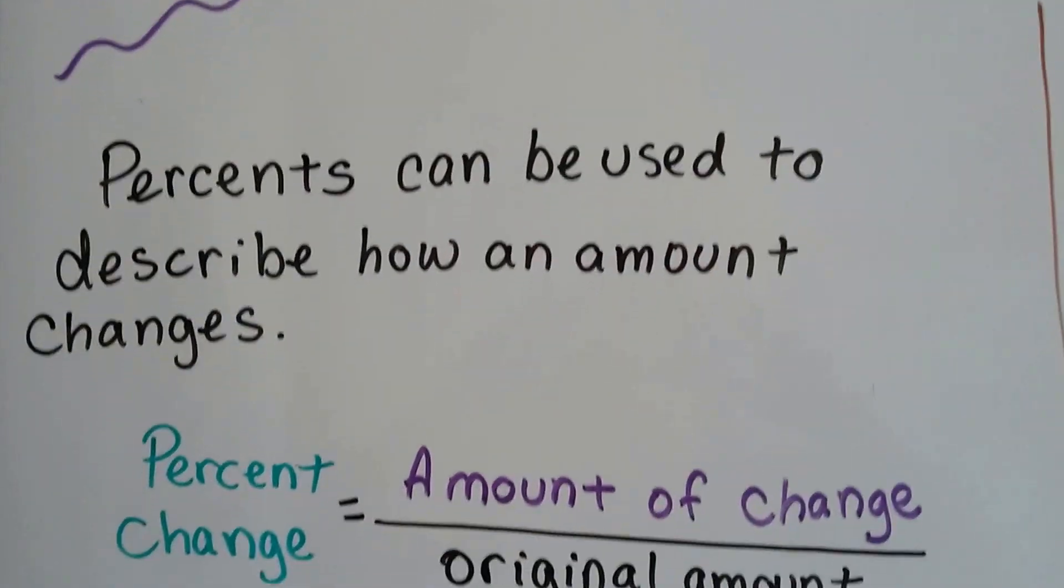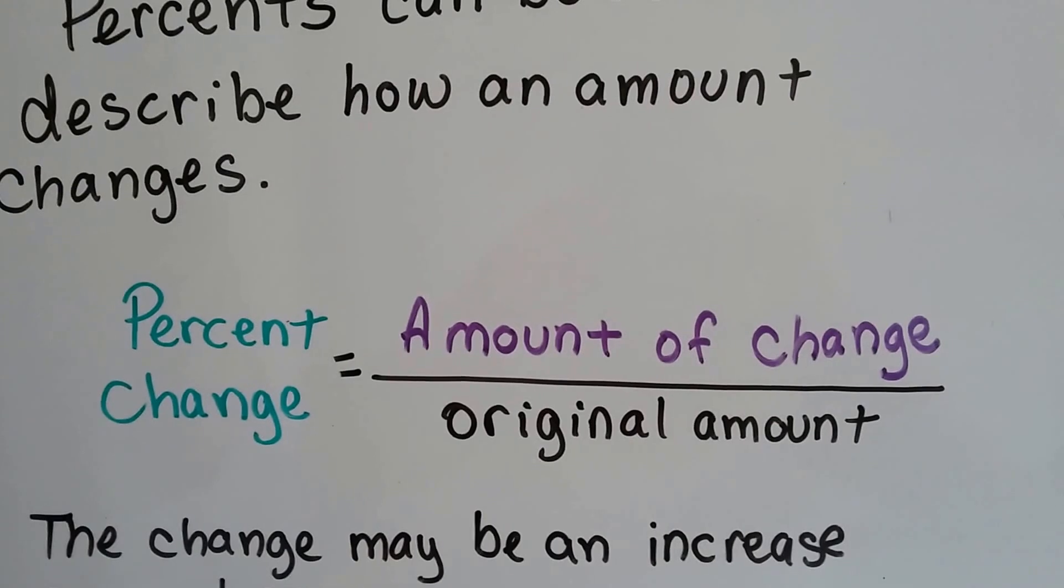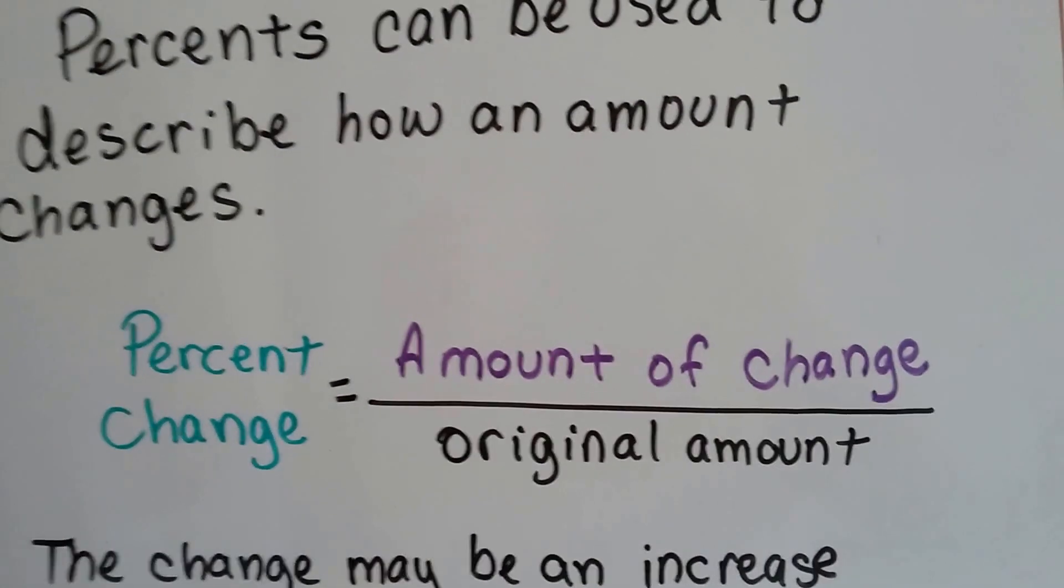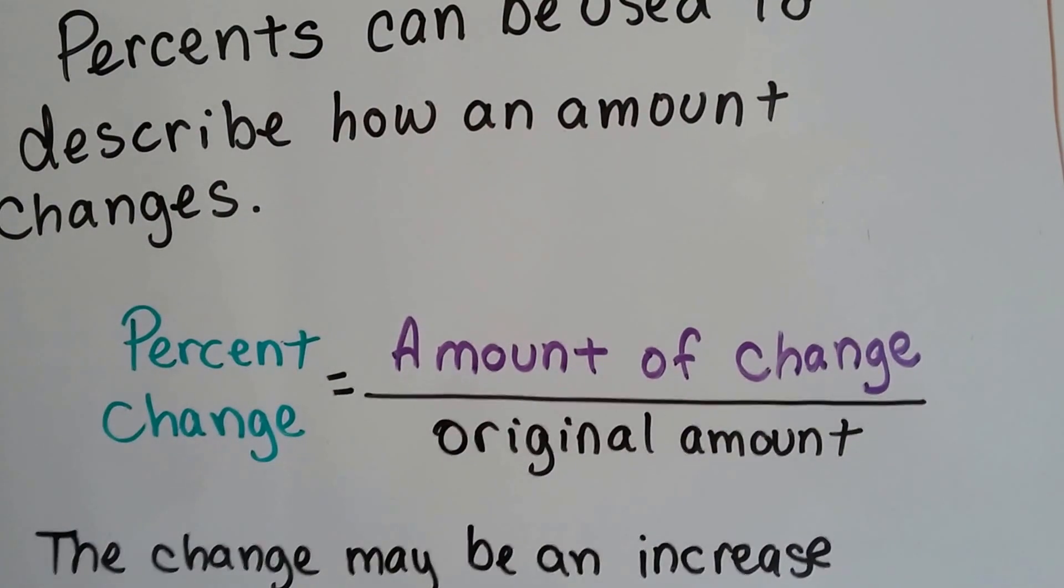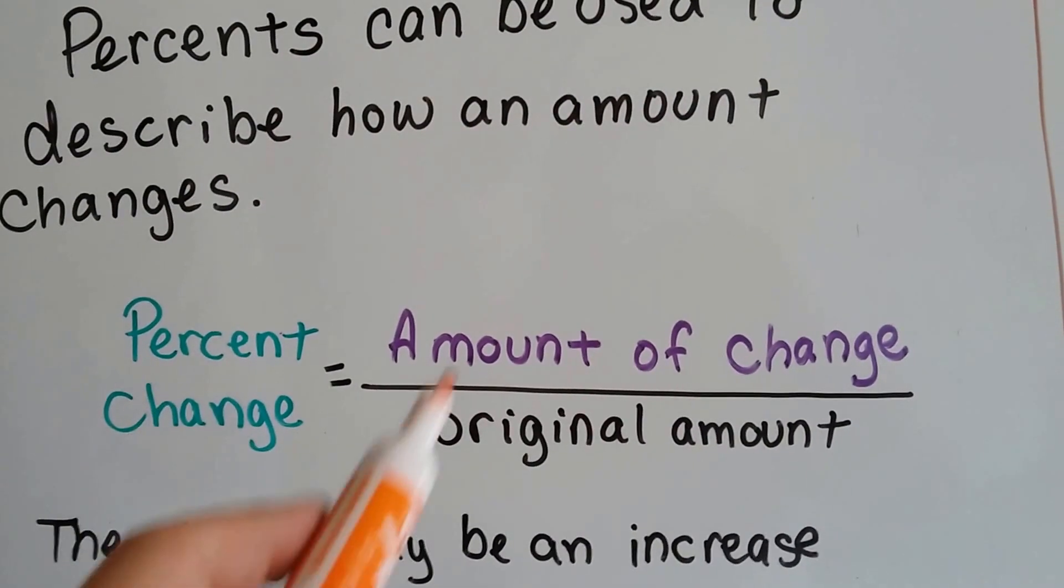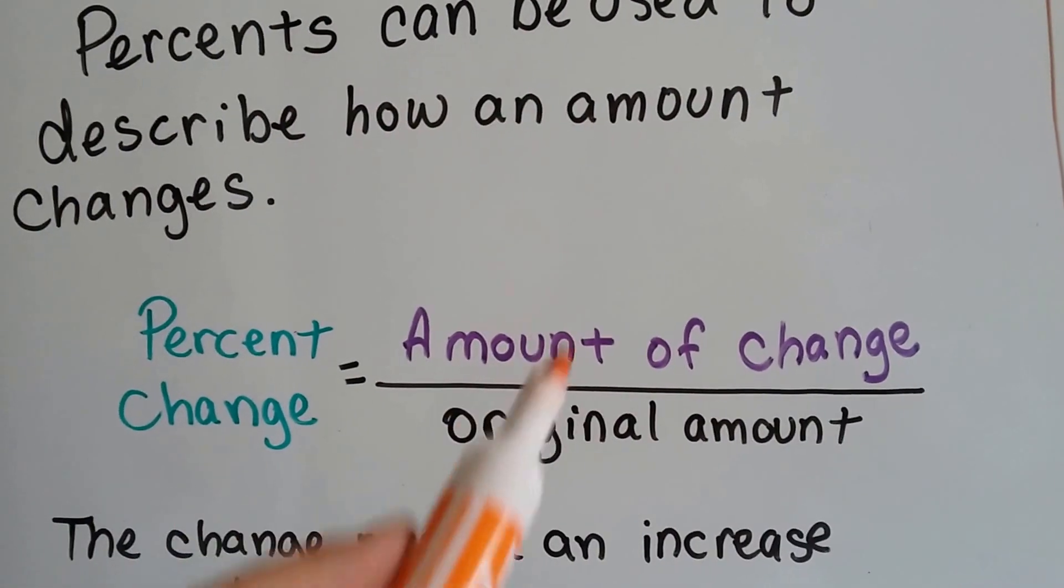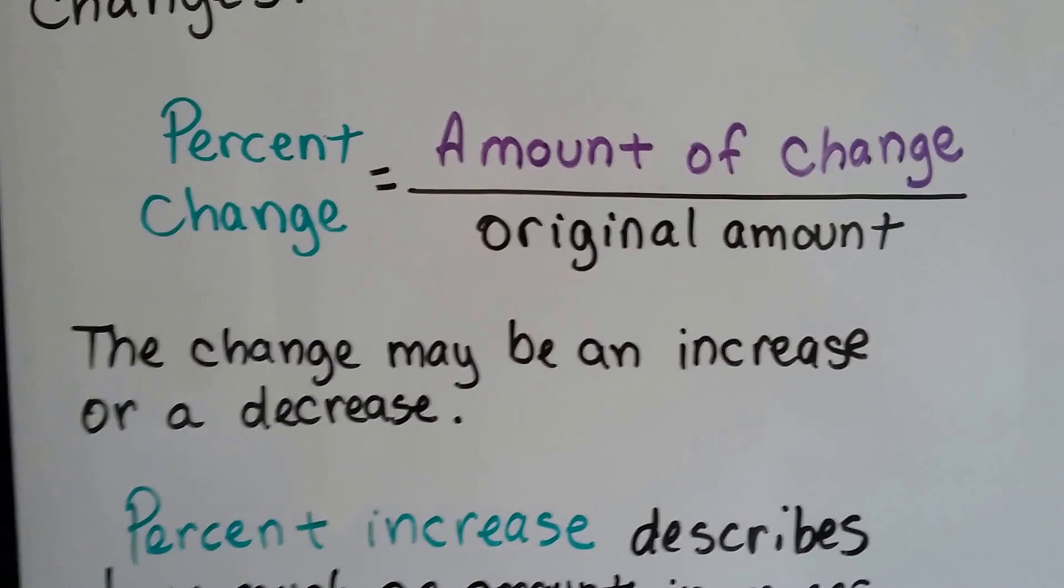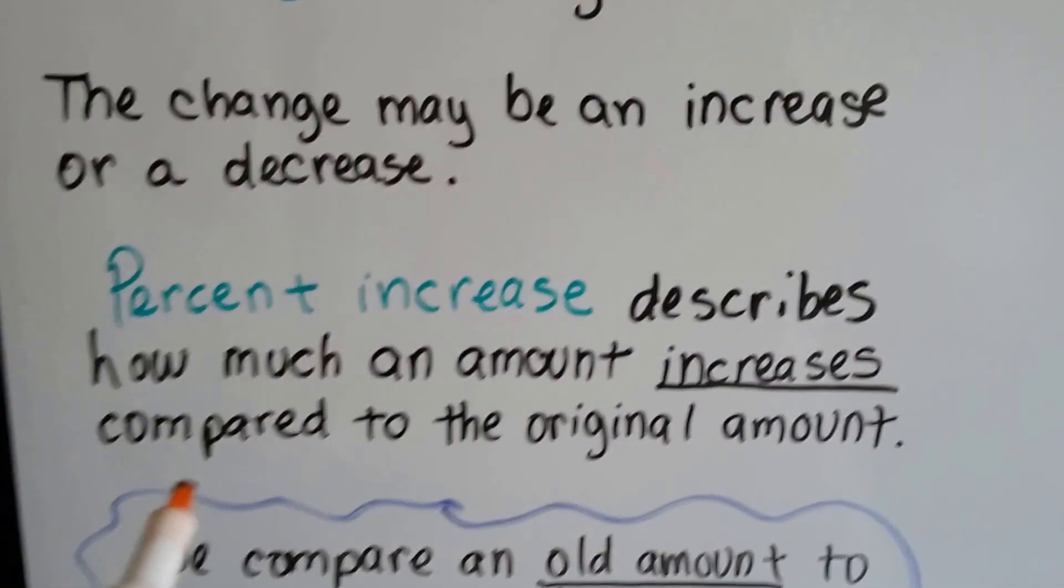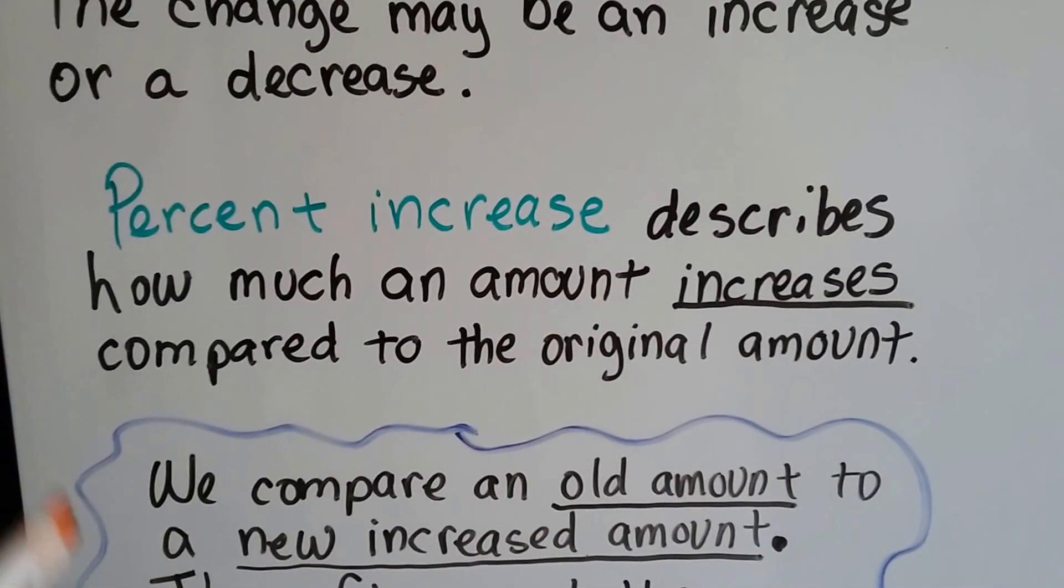Percents can be used to describe how an amount changes. We'll use this: percent change equals the amount of change over the original amount to find the percent change. The amount of change is going to be the numerator, and the original amount is going to be the denominator, and we're going to divide. The change may be an increase or a decrease. A percent increase describes how much an amount increases compared to an original amount.